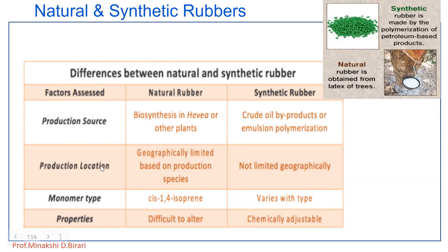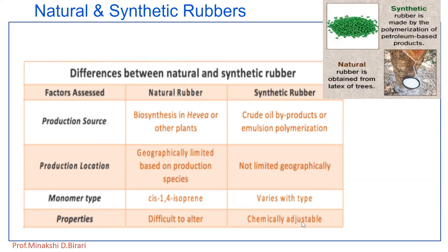The monomer unit involved in natural rubber is cis-1,4-isoprene, whereas for synthetic rubber the monomer type varies with the type of synthetic rubber. In terms of properties, natural rubber properties are difficult to alter, whereas synthetic rubber properties are chemically easily adjustable. These are the key points with which we can distinguish between natural and synthetic rubber.